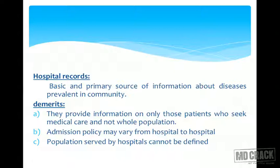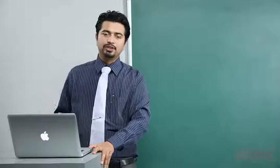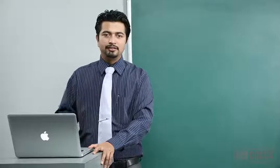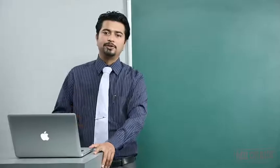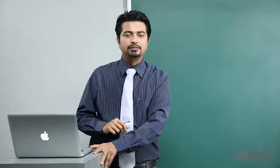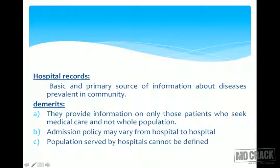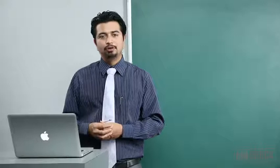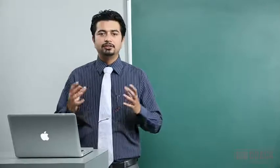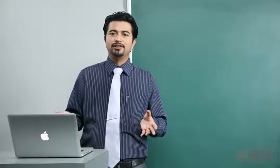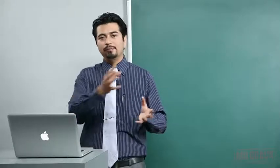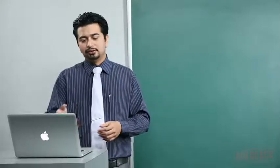The next source is hospital records, a basic and primary source of information about diseases prevalent in the community. Problems include: they provide information only on patients who seek medical care, not the whole population; the poorest with maximum disease may not afford hospital care; admission policy may vary from hospital to hospital; and the population served by hospitals cannot be defined. We don't get the denominator — we don't know how many patients out of how much population are at risk.